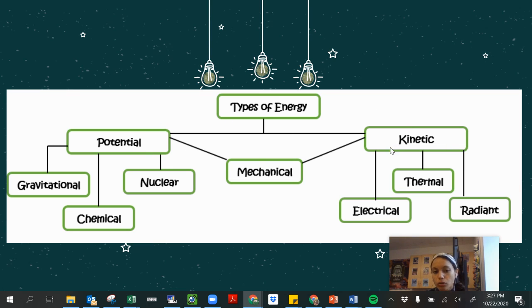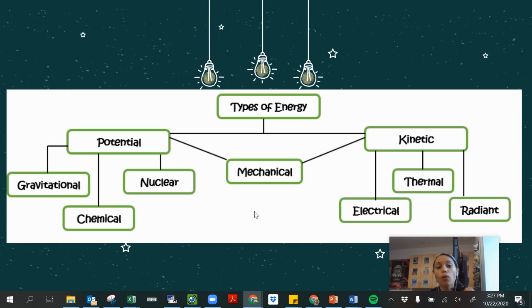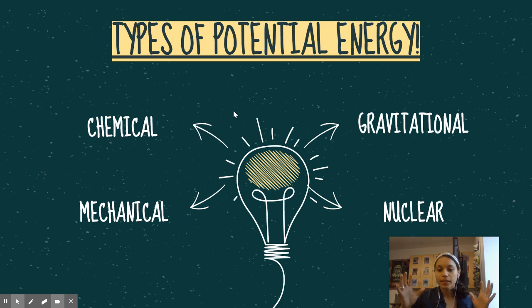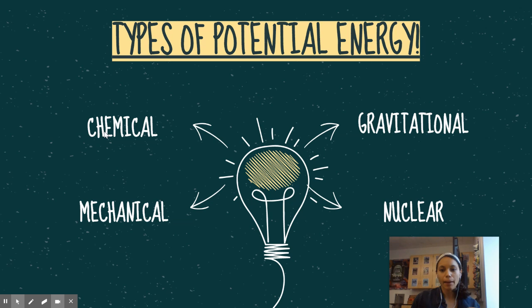Kinetic is motion, potential is stored energy. There are seven types or forms of energy that we will be discussing today. First, let's dig into potential energy. Within potential energy, there are four types: mechanical, chemical, gravitational, and nuclear. You already know about gravitational, so that is one less thing you need to really learn.